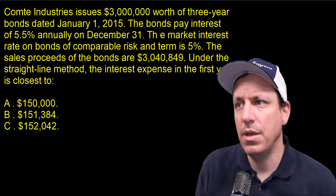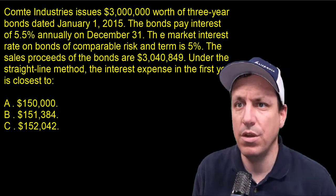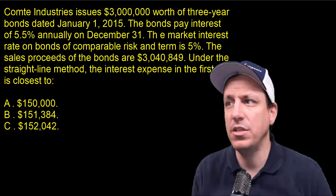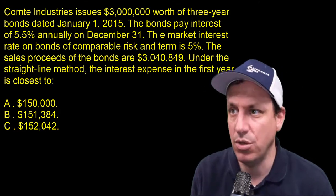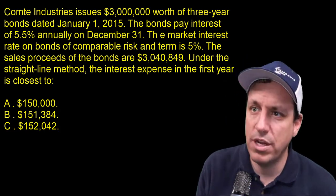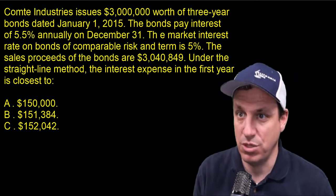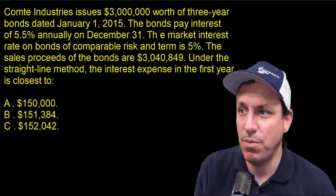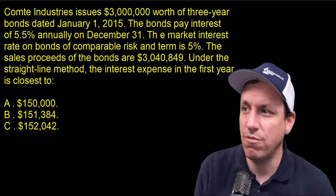The company issues $3 million worth of three-year bonds dated January 1st, 2015. The bonds pay interest of 5.5% annually on December 31st. The market interest rate on bonds of comparable risk and term is 5%. The sales proceeds on the bonds are $3,040,849.